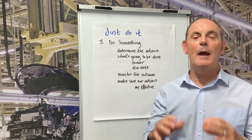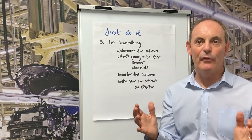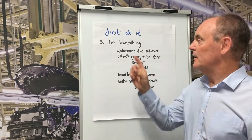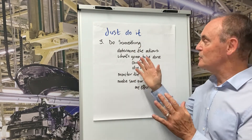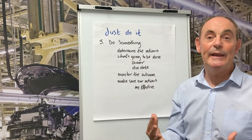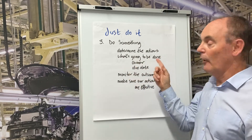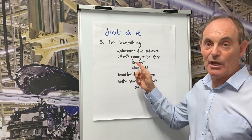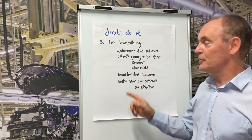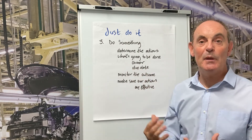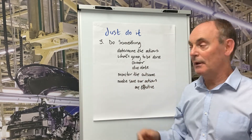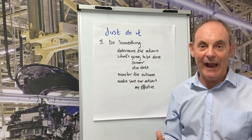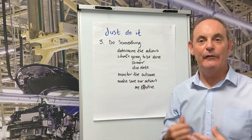After examining the facts and building our hypothesis or theory, it's time for our final step — step three: do something. This is where we determine the actions that are required to solve the problem. What's going to be done? Who is the owner of that action? When is it due? And after we put that action into place, we monitor the outcome. This is to make sure that our actions are effective.